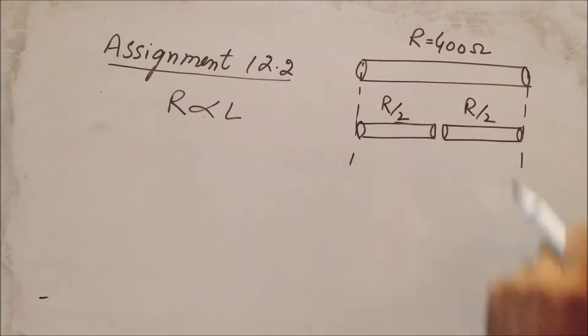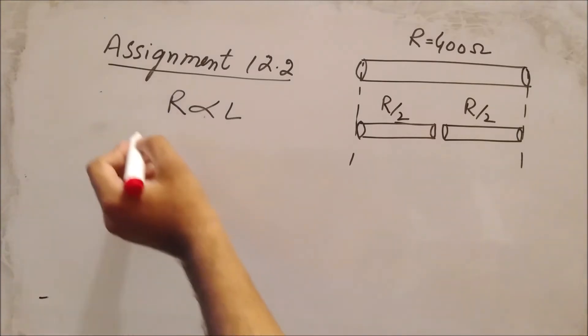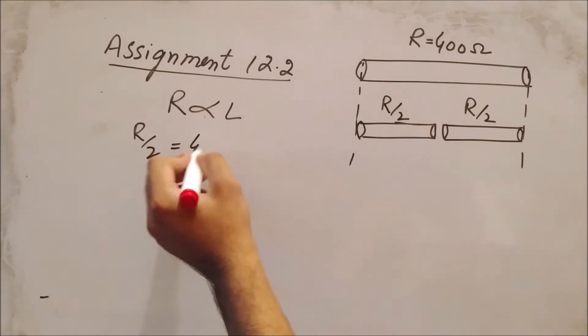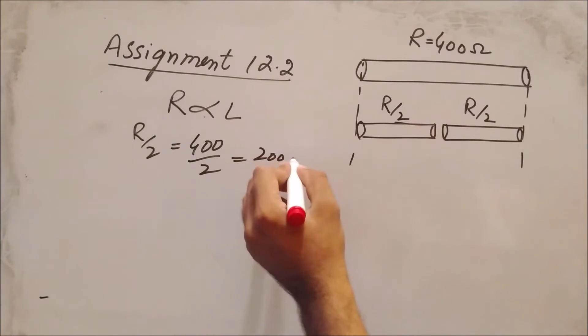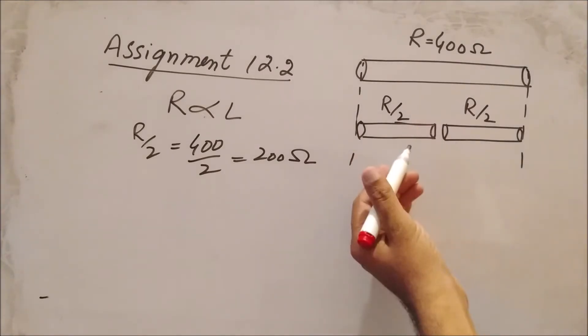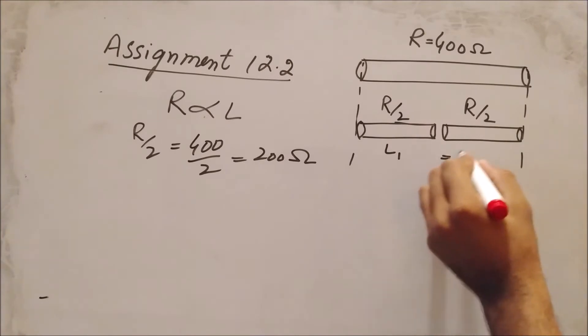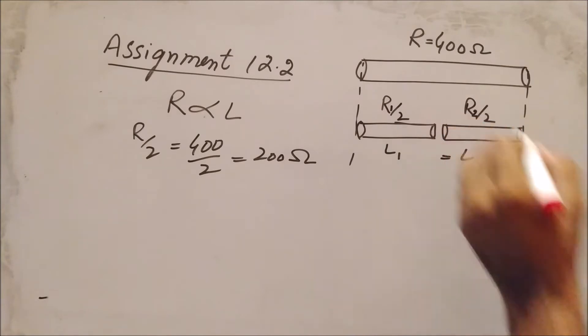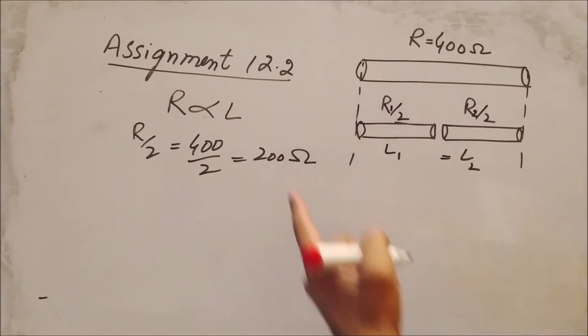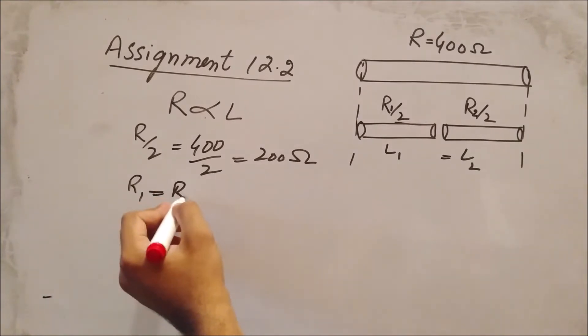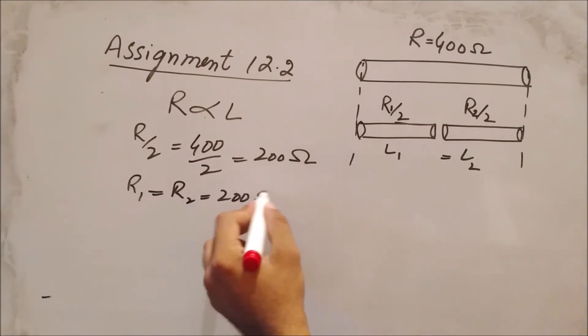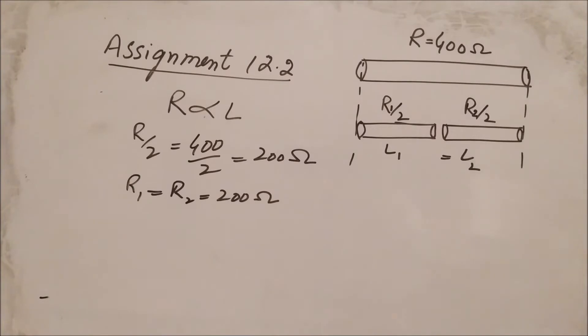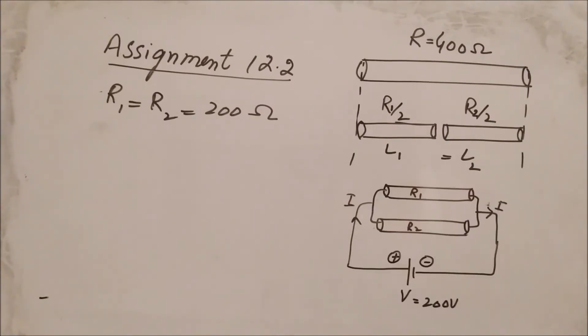R/2 means 400 divided by 2, so the resistance for each piece of wire is 200 ohms. Since the lengths are the same (L1 = L2), the resistances are equal: R1 = R2 = 200 ohms.